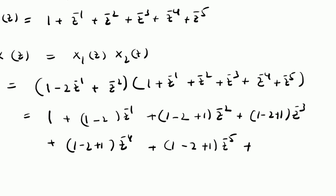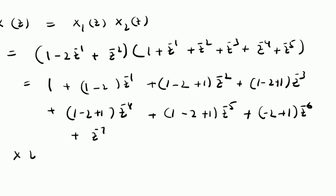For z^(-6): there is no z^0 term contributing, so we have (-2)×z^(-1)×z^(-5) + z^(-2)×z^(-4), giving coefficient (-2+1) = -1. For z^(-7): z^(-2)×z^(-5) gives coefficient +1. Summarizing, X(z) = 1 - z^(-1) + 0 (from z^(-2) to z^(-5)) - z^(-6) + z^(-7). This is the final Z-transform.